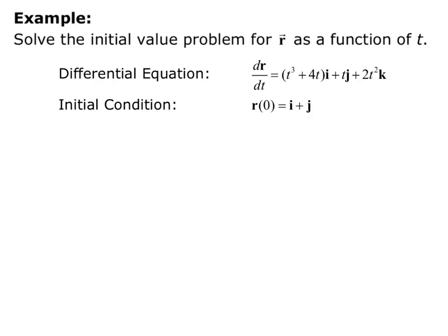The first thing we want to do is find r of t, so we take the antiderivative of dr/dt to get r. So r of t equals the integral of t cubed plus 4t dt times i, plus the integral of t dt times j, plus the integral of 2t squared dt times k — taking the integral of each component separately.